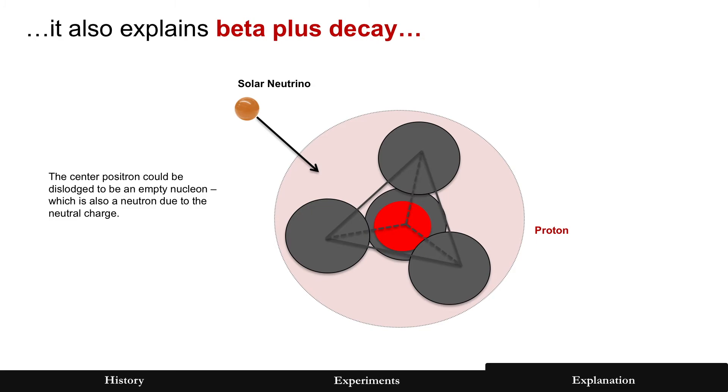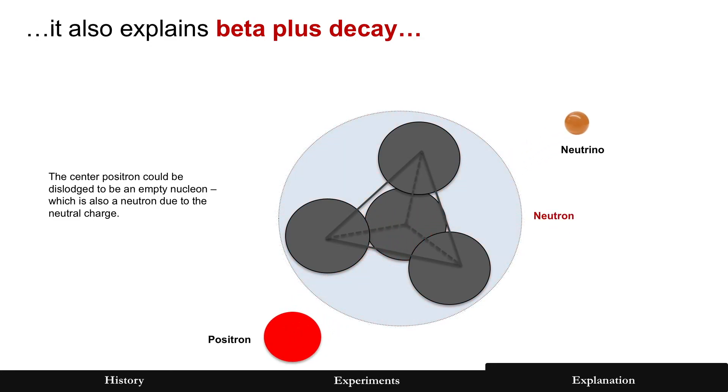And the opposite of beta minus decay, that same process of something with kinetic energy, such as a solar neutrino ejecting the positron, turns the proton into a neutron. Again, all of these match experiments and what is ejected from the particle.